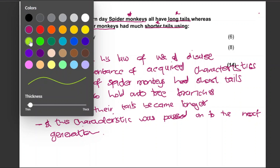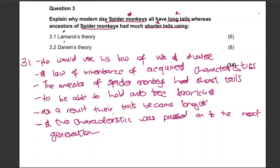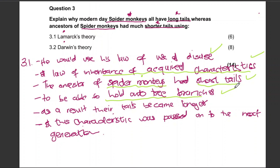Let me show you how this will be marked. He would use his Law of Use and Disuse and the Law of Inheritance of Acquired Characteristics — mention all of it. Then: the ancestor of spider monkeys had short tails — tick. They were using their tails to hold on to branches, so the tails became longer, and this characteristic was passed on to the next generation. Six marks.